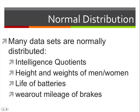Many data sets are normally distributed, which is why it's important to learn this. So intelligence quotients or IQs are normally distributed, the height and weight of men and women, the life of batteries, and wear-out mileage of brakes.